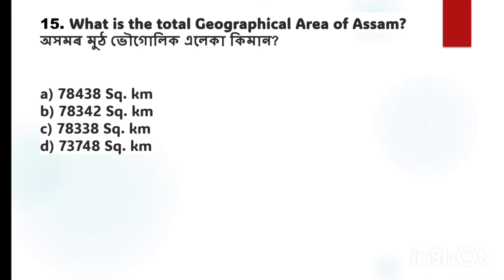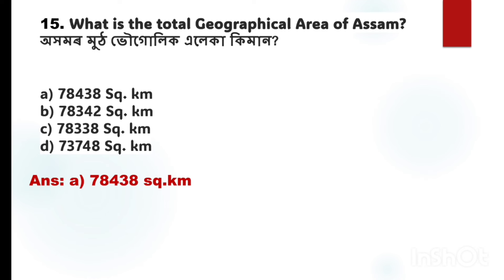Question number 15: What is the total geographical area of Assam? The correct answer is Option A: 78,438 square kilometers.